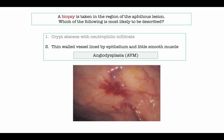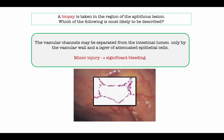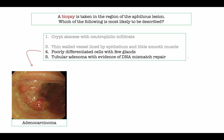Choice three includes the description of a thin-walled vessel lined by epithelium and scant smooth muscle — the description of an AVM. These vascular channels may be separated from the intestinal lumen only by the vascular wall and a layer of attenuated epithelial cells. That's a recipe for disaster — put that patient on Warfarin or Plavix and you have a hot GI bleed.